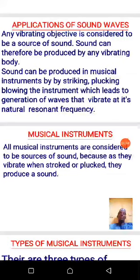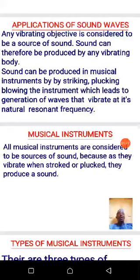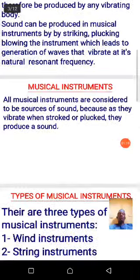Sound can be produced in a musical instrument by striking the instrument, by plucking, or by blowing the instrument, and that will lead to generation of waves that vibrate at its natural resonant frequency. So when an object is being disturbed, it vibrates and that leads to generation of sound waves.